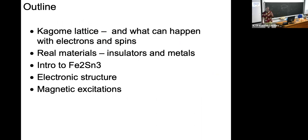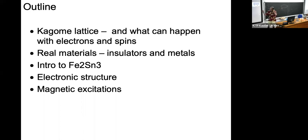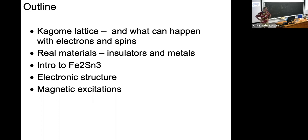By way of outline, I'm going to briefly reintroduce the kagome lattice and what can happen on it with electrons and spins, and why it is so interesting for the correlated electron community. I'll then briefly touch on what's being done with real materials — insulators and metals — in the search for flat bands, and then talk about the material which is the main topic of my lecture today, dealing with electronic structure and magnetic excitations.